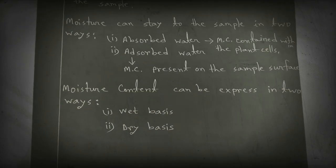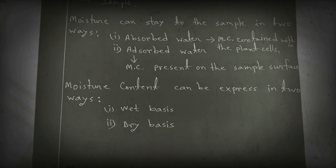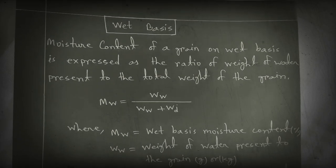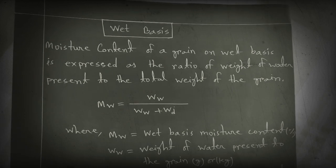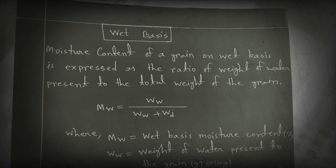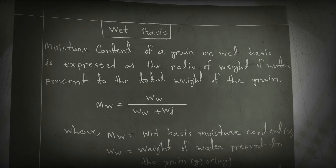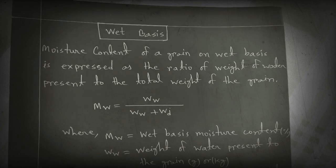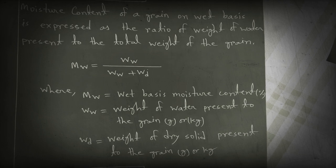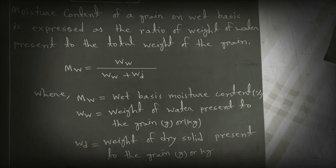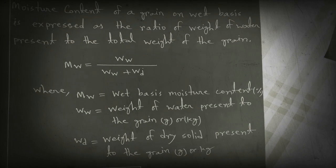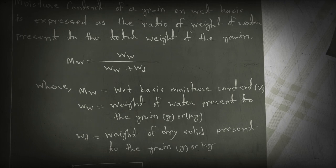Moisture content can be expressed in two ways: weight basis and dry basis. The moisture content of a grain on weight basis is expressed as the ratio of weight of water present to the total weight of the grain. The formula is: Mw = Ww / (Ww + Wd), where Mw is the weight basis moisture content expressed as a percentage, Ww is the weight of water in the grain, and Wd is the weight of dry solid in the grain (units: grams or kilograms).